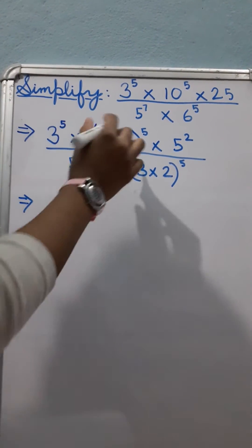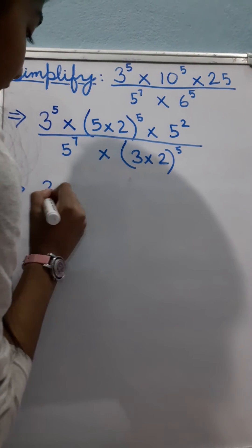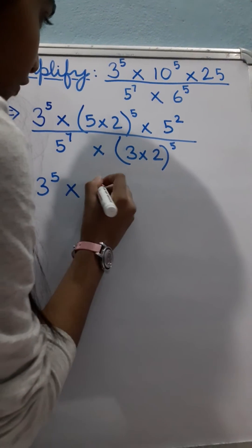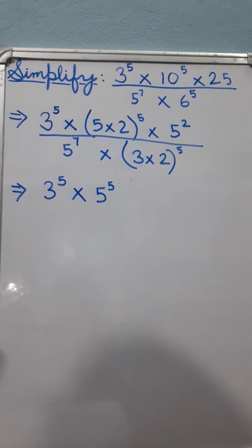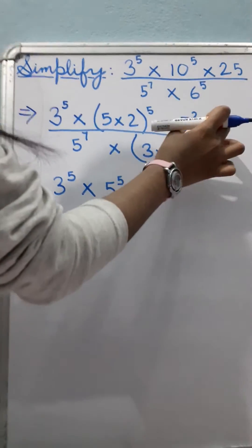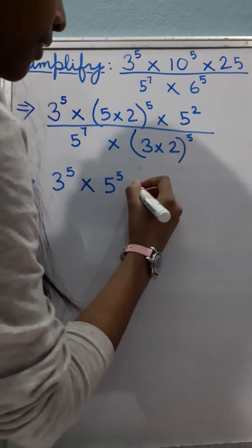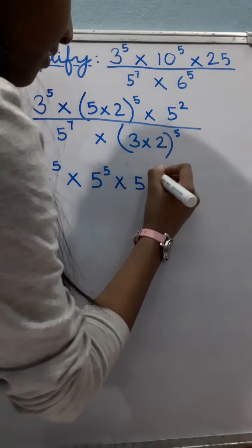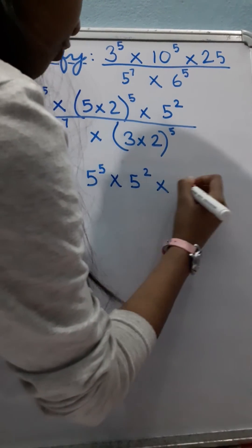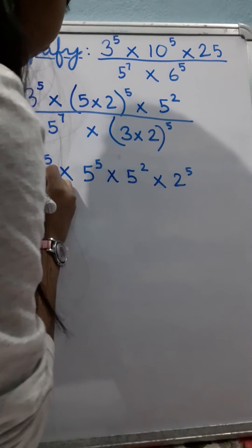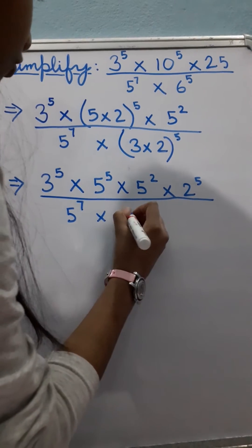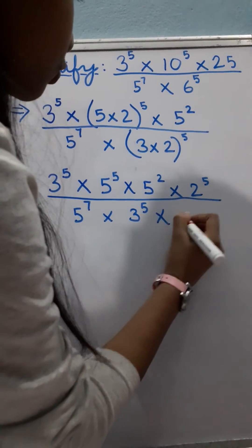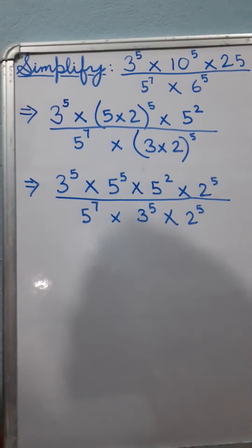Now, we will write this separately like 3 raised to the power 5 into 5 raised to the power 5. And because two bases are same, so we will write this at one place into 2 raised to the power 5 by 5 raised to the power 7 into 3 raised to the power 5 into 2 raised to the power 5.